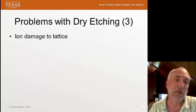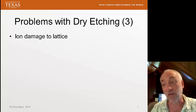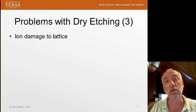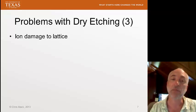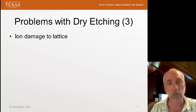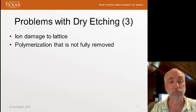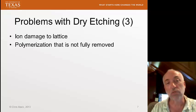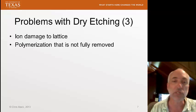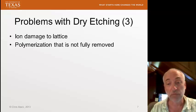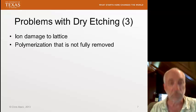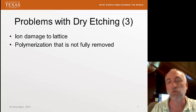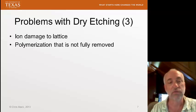Other problems include ion damage to the lattice — once we've stopped etching, we could still bombard the substrate with ions and actually damage the structure of that layer, particularly if it's the silicon surface itself. Polymerization is an important mechanism for sidewall passivation to get steeper profiles, but we must ensure that any polymer on the bottom of the etched surface is fully removed. Polymer residue can cause problems with the characteristics of the etched surface.